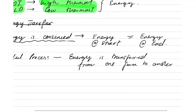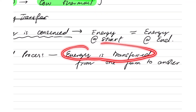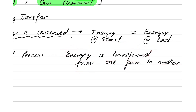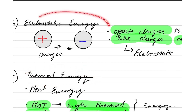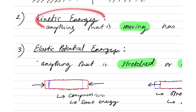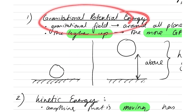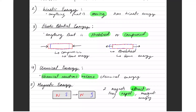So if energy is transferred from one form to another, what does this mean? For a useful process, you have to have thermal energy being transferred into something else, or for example, kinetic energy being transferred into gravitational potential energy. Let's look at an example of this.